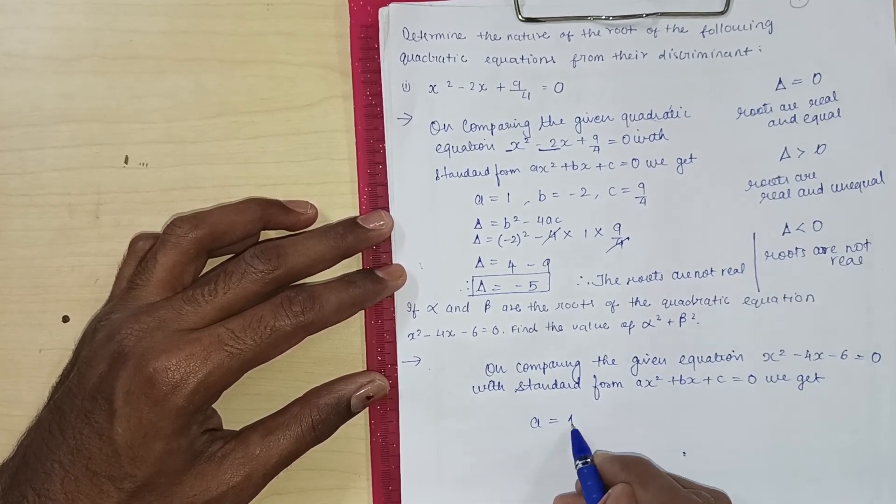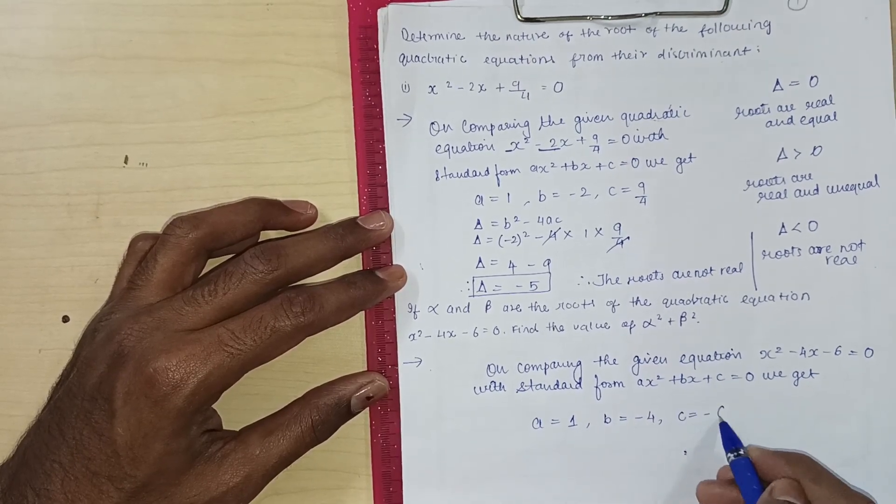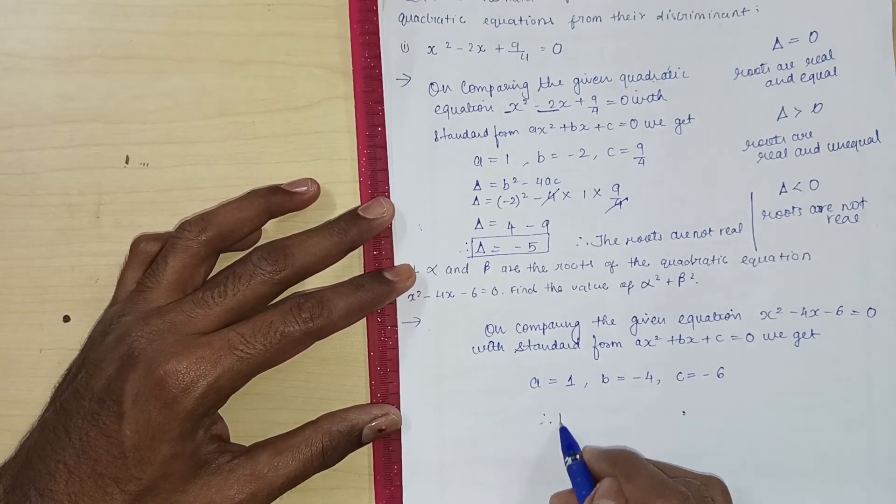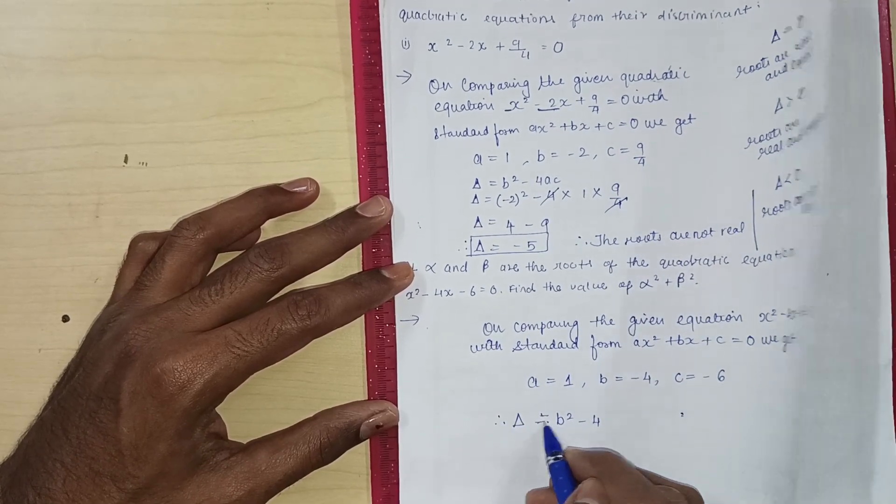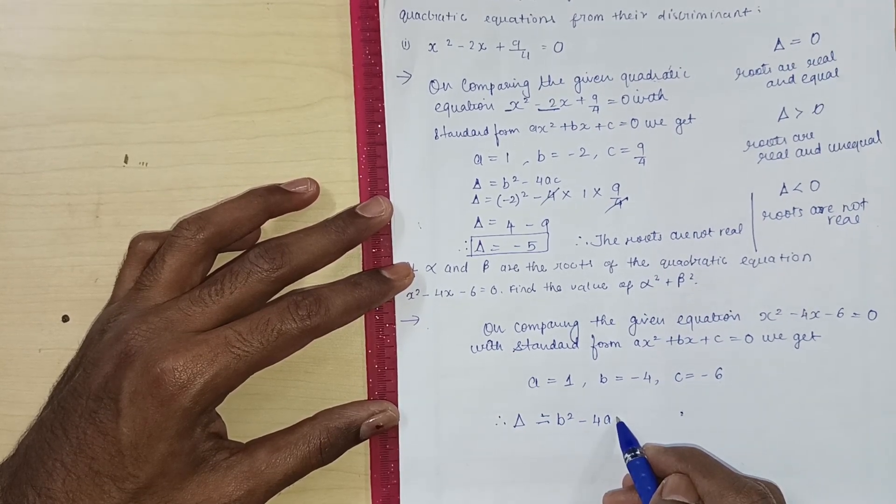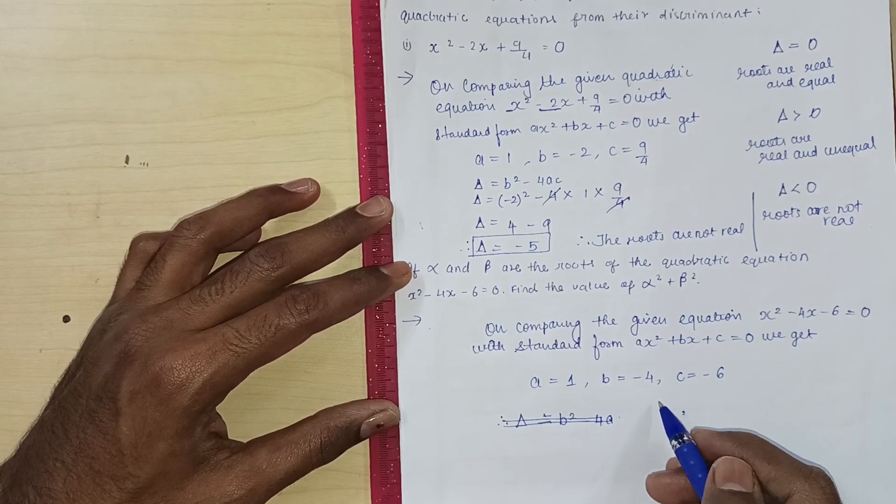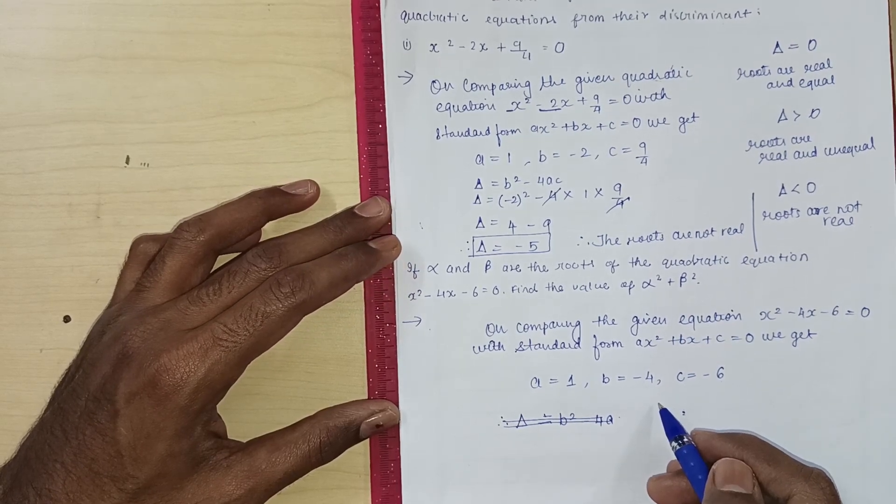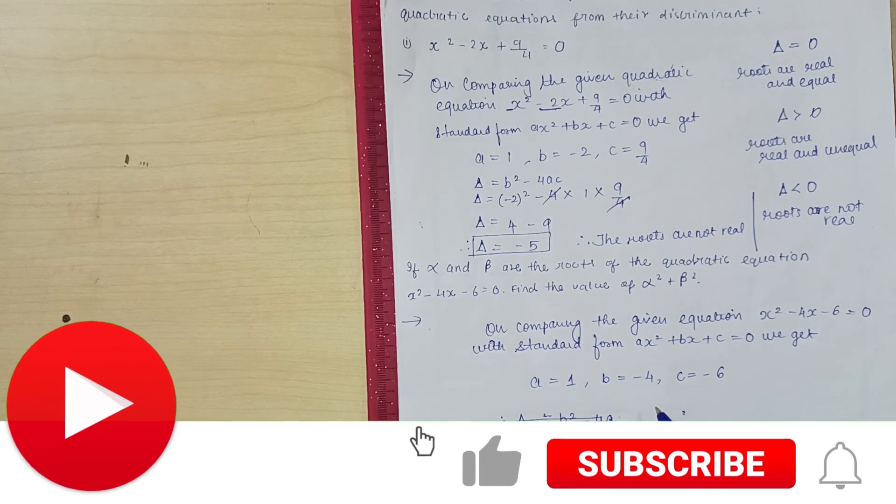A is 1, b is minus 4. Delta is equal to b square minus, delta is equal to b square minus, I am sorry, we are not supposed to write down that, right? We are supposed to write down what? Alpha and beta. Okay? Alpha and beta, alpha square plus beta square.